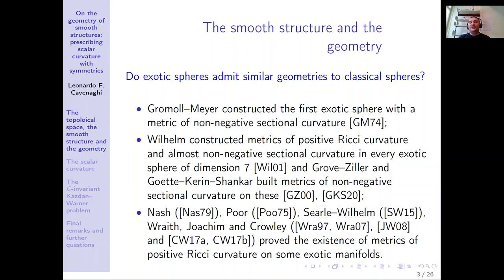It has been a long journey trying to answer this question, and a lot of research has been done. A great result that perhaps gave the first glimpse that exotic spheres should carry similar geometries to classical spheres is the construction by Gromoll-Meyer of an exotic sphere, where they put a metric of non-negative sectional curvature on a seven-dimensional exotic sphere. Later, Fred Wilhelm constructed metrics of positive Ricci curvature and almost non-negative sectional curvature on every exotic sphere of dimension seven.